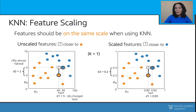In the unscaled scenario, while trying to identify the one nearest neighbor for class assignment for our new data point, the blue dot looks closer. However, when we compute the distances, the distance to the blue point turns out to be 5, which is much more than the distance to the orange data point, which is 2. Therefore, the orange data point wins, and the class prediction for the new data point is orange.